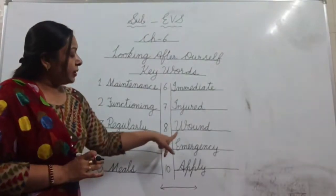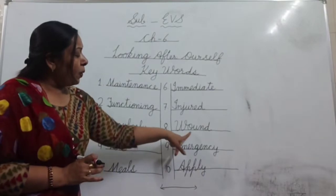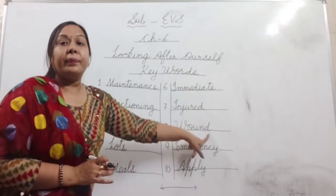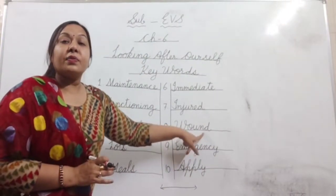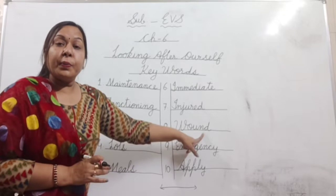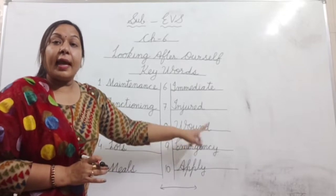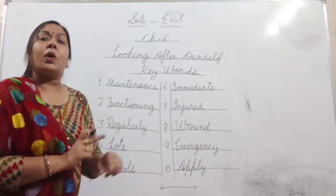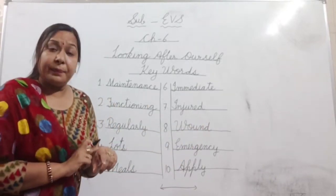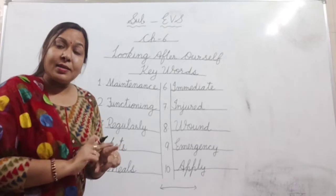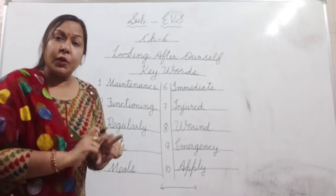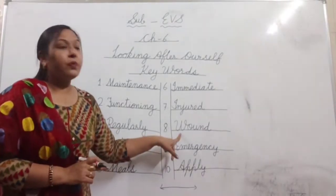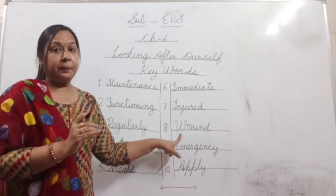Number eight: w-o-u-n-d — it's wound. Wound means any cut or injury on the skin. Skin pe koi cut lag jana, injury ho jana. Wound means zakham ho jana.